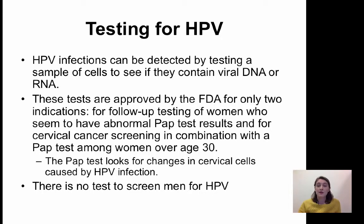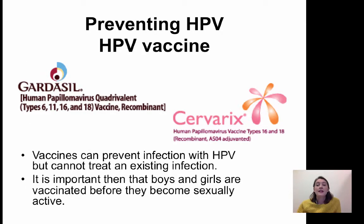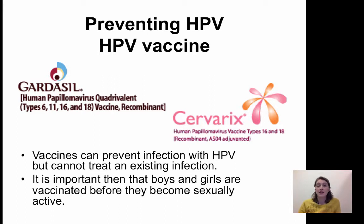Now that science has shown that HPV causes cervical cancer, it would be best to prevent HPV infection in the first place. An HPV vaccine has been developed — the first came on the market in 2006, and this is Gardasil. It protects against four different specific strains of HPV: HPV-16 and HPV-18, which are found in 70% of cervical cancers, as well as two other high-risk strains, HPV-6 and HPV-11.